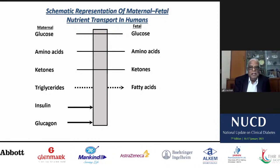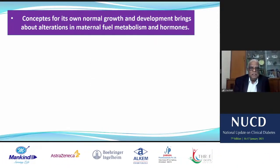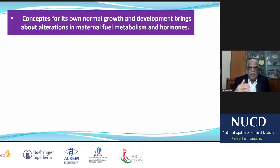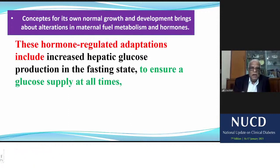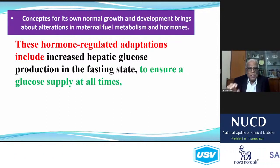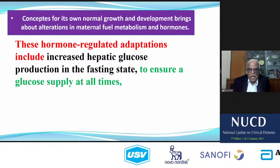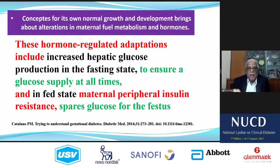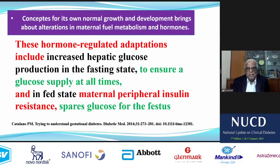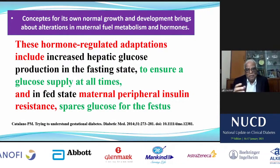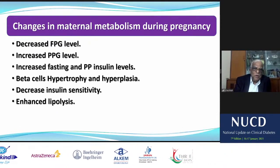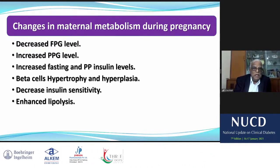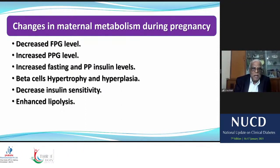How does fetal handling of maternal glucose occur? The fetus and placenta, for their own growth and development, bring about alterations in maternal fuel metabolism and hormones. Regulated adaptations include: increased hepatic glucose production in the fasting state to ensure glucose supply at all times, and in the fed state, maternal peripheral insulin resistance spares glucose for the fetus. This beautiful balancing between the fasting and fed states changes maternal metabolism. Key changes are decreased fasting plasma glucose, increased postprandial blood glucose, increased fasting and postprandial insulin levels, beta-cell hypertrophy and hyperplasia, and decreased insulin sensitivity.